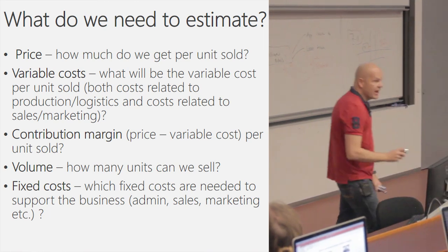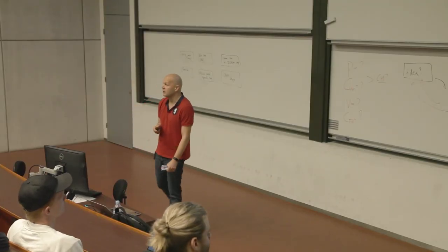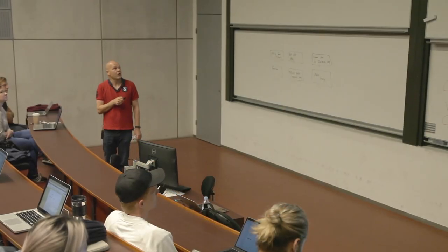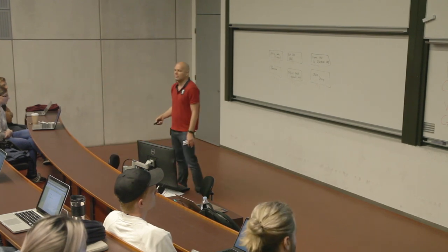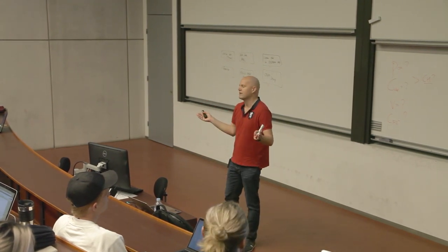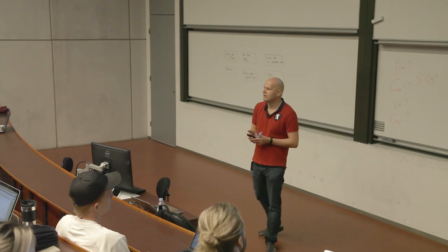This is just a generic way of seeing startups from a funding perspective. You start here — this is the cash flow, positive above, negative below. This is probably called the 'valley of death' for startups. Why? Because often here you need so much money. In the early days, you and two mates have decided to go all in and do this startup. Let's call it a software startup — what kind of costs do you have in the early days, normally?